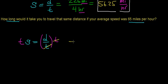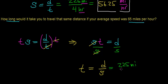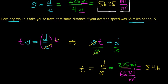Notice the t cancels out, giving us the relationship: average speed times time equals distance. Since we're looking for time, we divide both sides by speed — that term cancels out — giving us t equals distance divided by speed. In this case, that's 225 miles divided by 65 miles per hour. 225 divided by 65 works out to be 3.46, and our units work out to be hours.